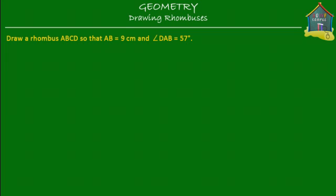Welcome to homecampus.com.sg. In this lesson we'll draw a rhombus ABCD so that AB is equal to 9 cm and angle DAB is equal to 57 degrees.